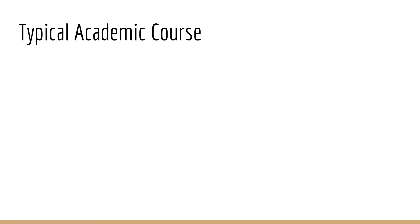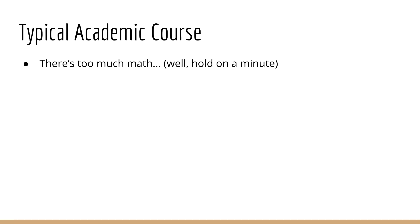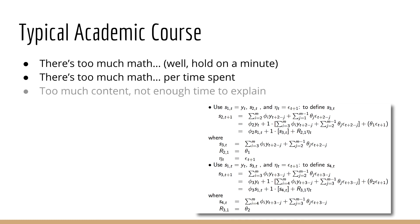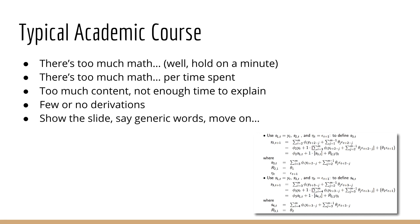Now let's talk about the typical academic course, which is essentially the other extreme. Whereas the typical online course is too basic and has too little math, the typical academic course contains too much math per time spent. A typical college course has slides that look like this. The problem is, there's just too much going on and not enough time to explain it. College professors tend to present these equations without deriving anything — they show you these slides, say a few words, and then move on to the next slide. This is not the way to do math. Math should be derived; you should understand each line step by step.